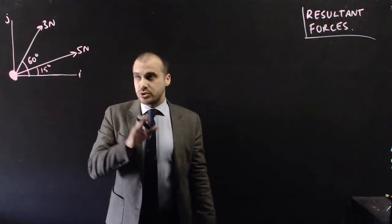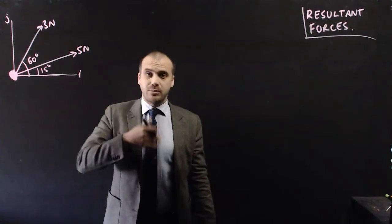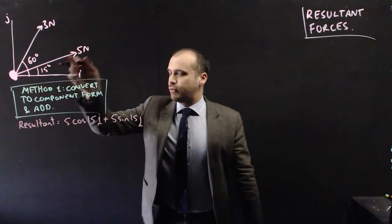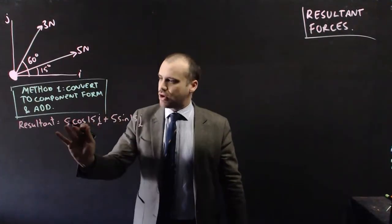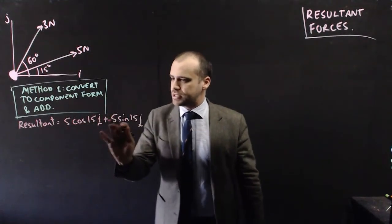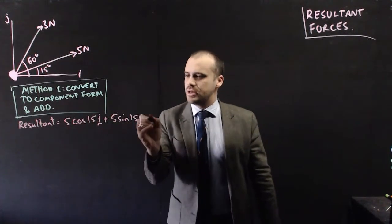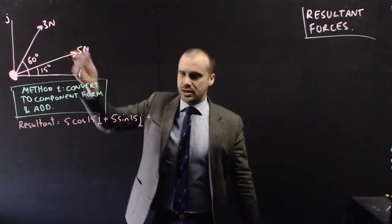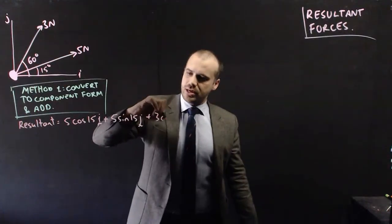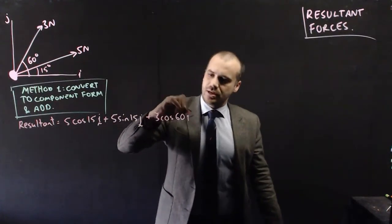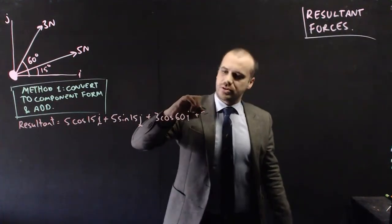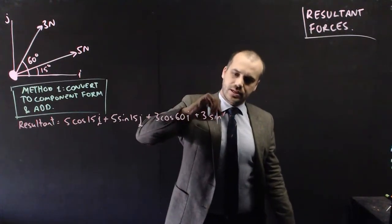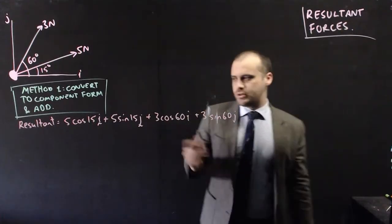Now, you could, if you wanted to, convert them to component form and add them together. So our first vector here, if we convert it to component form, it would be 5 cos 15i plus 5 sine 15j. And then we also need to add our second force here, which would be 3 cos 60 in the i direction, plus 3 cos 60 in the j direction.